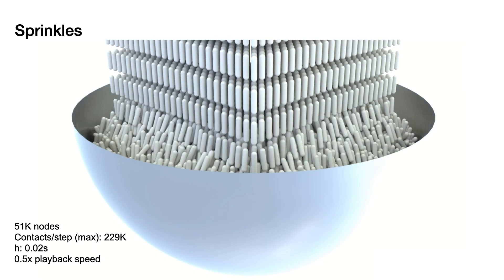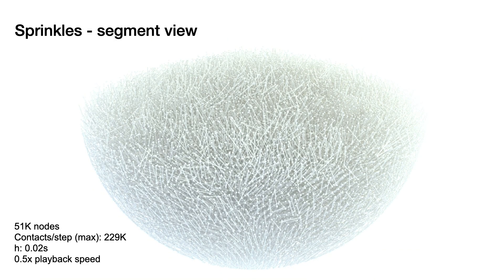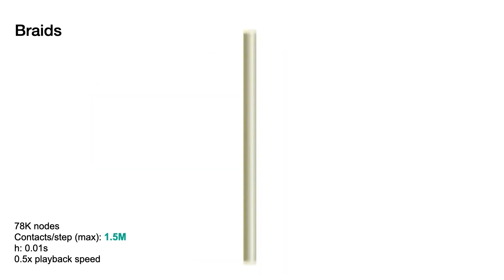Similarly, we can do the same with just edge segments to create a bowl of sprinkles, or to rapidly twist discrete rods into a tight, non-intersecting braid. Here, CIPC processes up to 1.5 million contacts per time step.